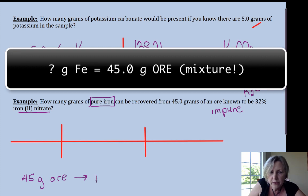So I'm going to go from grams of ore to grams of iron(II) nitrate, and then I can find out how many grams of iron I could purify from this sample.